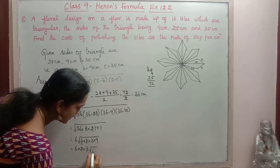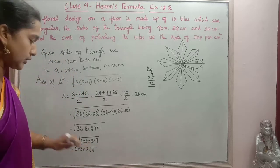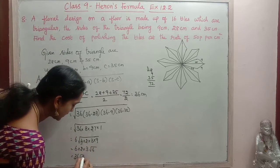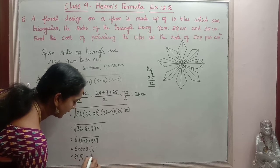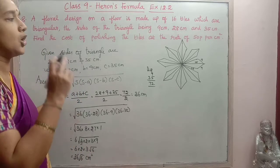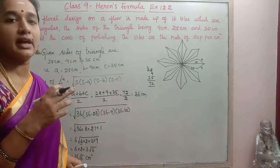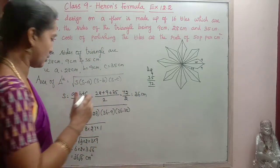So the remaining is root 6. 3 2's are 6. So 3 2's are 6. 6 6 are 36. So 36 root 6 centimeter square is the area of one triangular piece. So like that we are having 16 triangular piece.